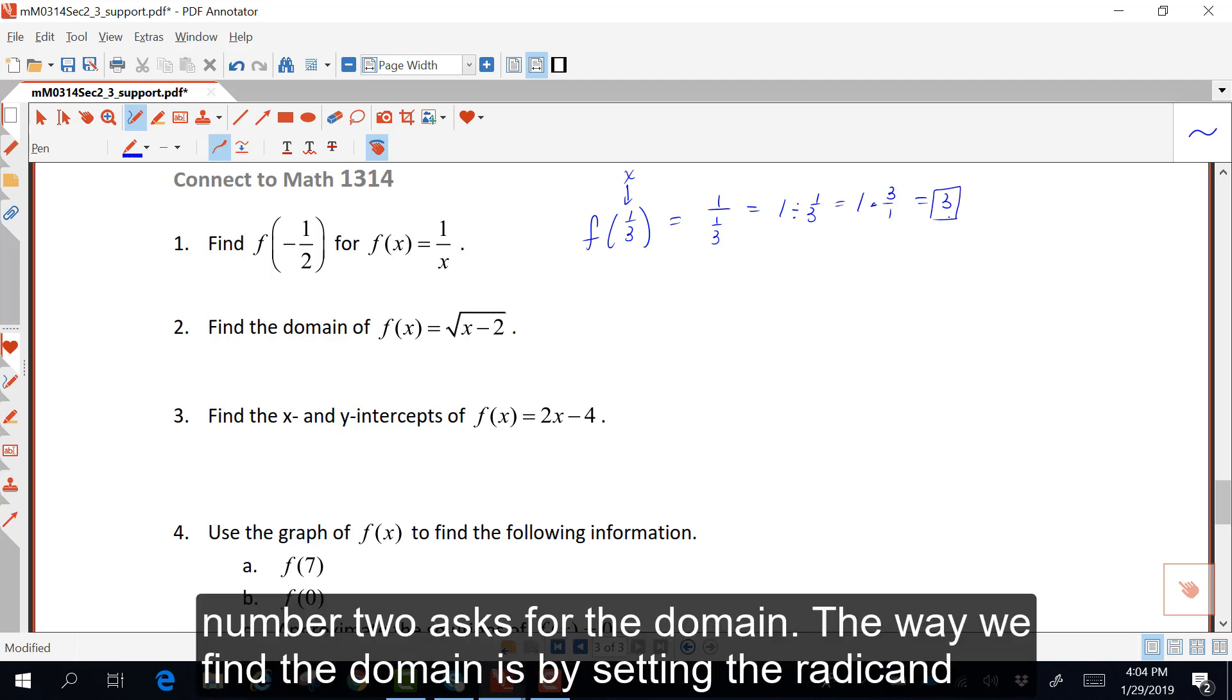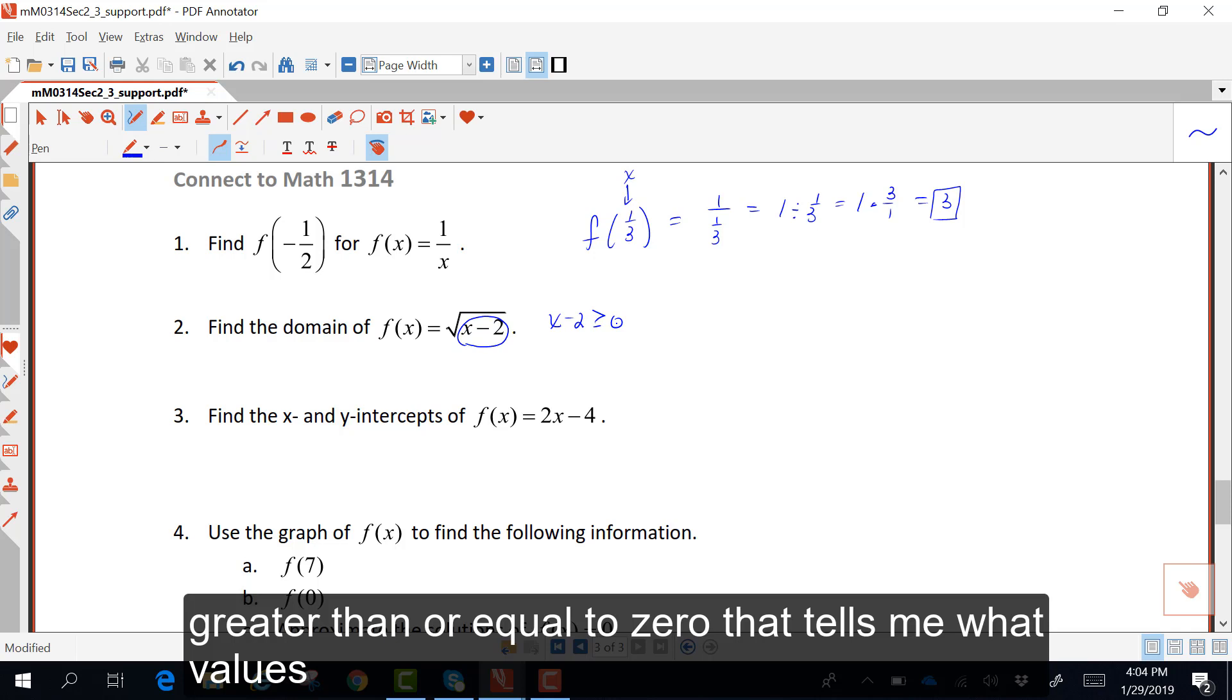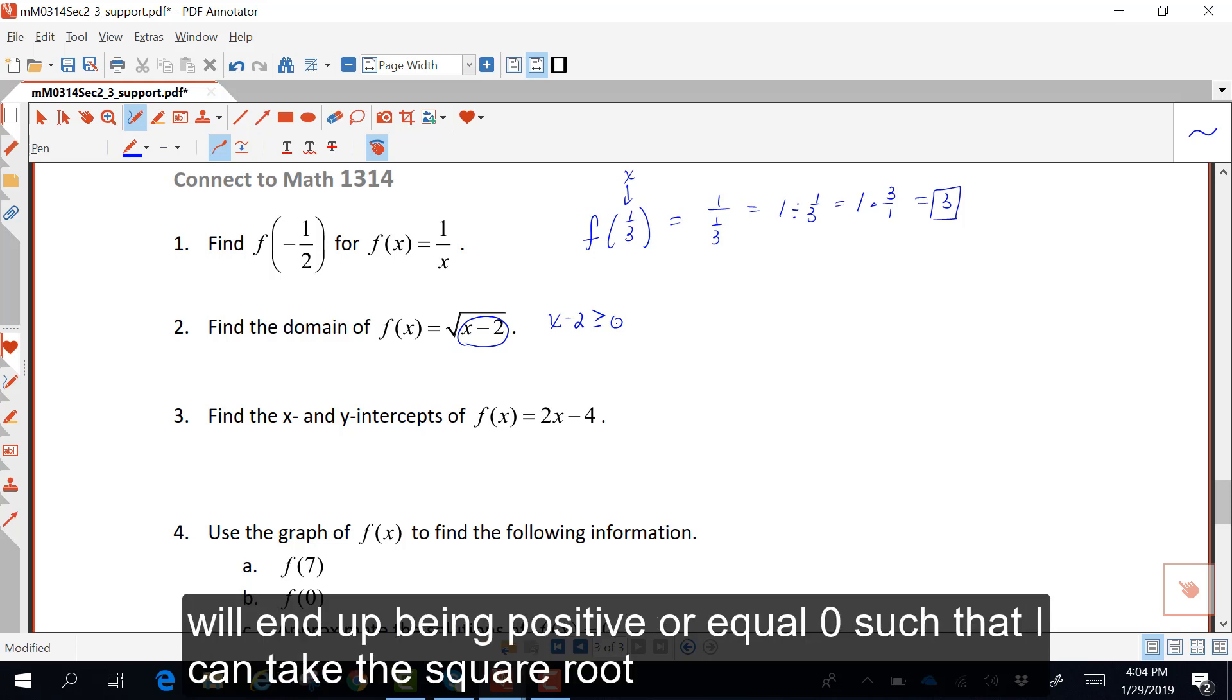Number two asks for the domain. The way we find the domain is by setting the radicand greater than or equal to 0. That tells me what values will end up being positive or equal to 0, such that I can take the square root.